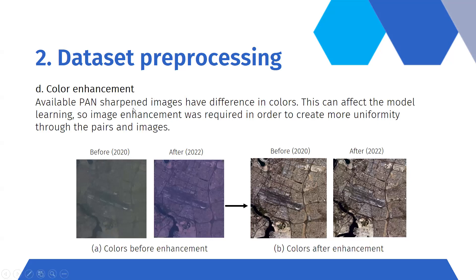Another important step was color enhancement. The available pan-sharpened KhalifaSat images have differences in color, which can affect the model. We applied color enhancement to both images to achieve more uniformity across pairs, so the model can learn better with fewer color differences and with the images being as visually alike as possible.